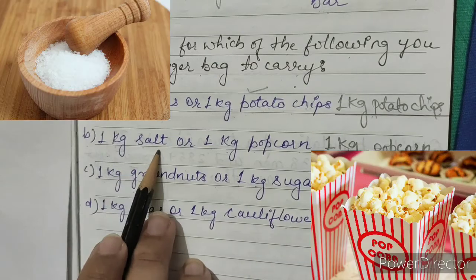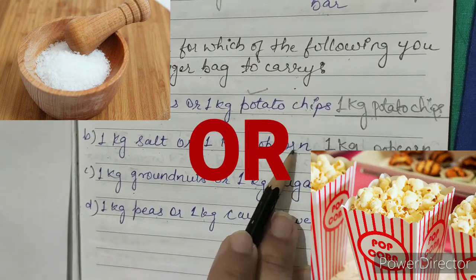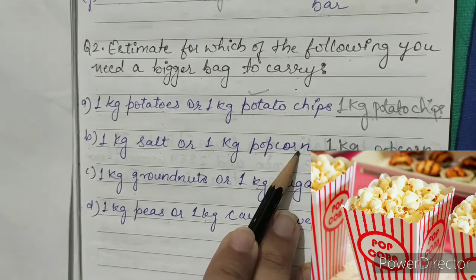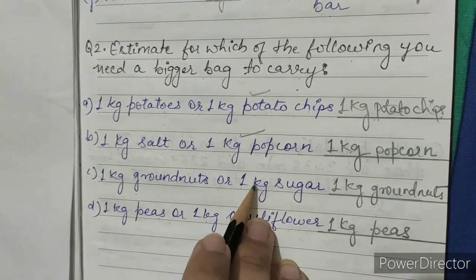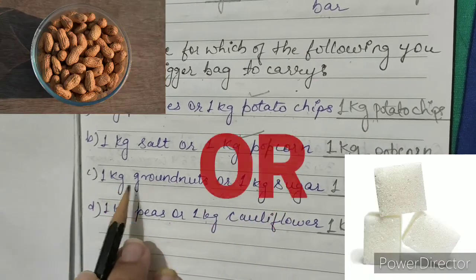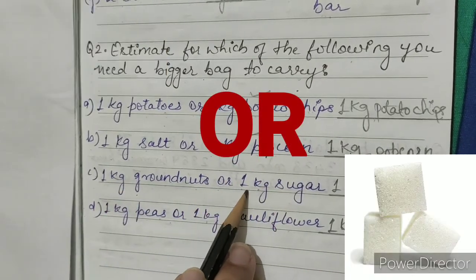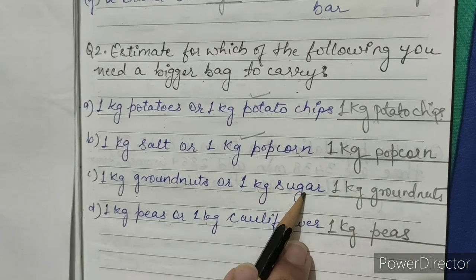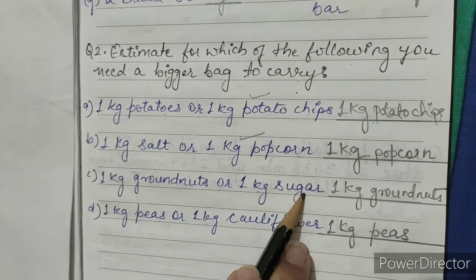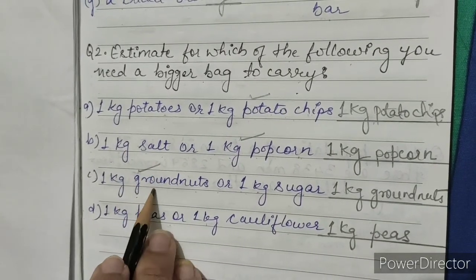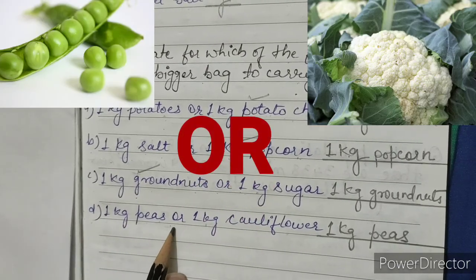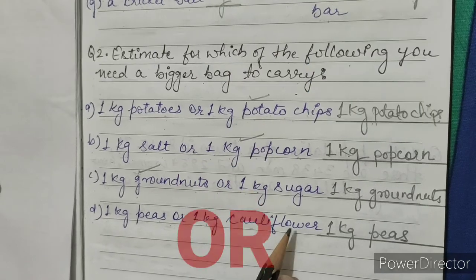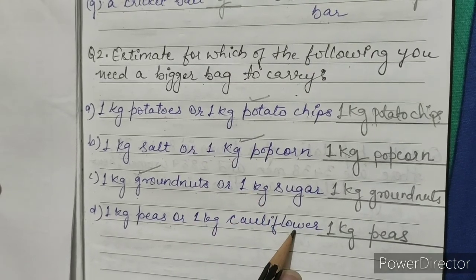B. 1 kg salt or 1 kg popcorn - so we need a bigger bag for 1 kg of popcorn. C. 1 kg groundnuts or 1 kg sugar - so we need a bigger bag for 1 kg groundnuts. D. 1 kg peas or 1 kg cauliflower - so we need a bigger bag for 1 kg peas.